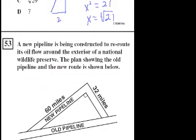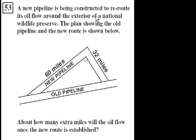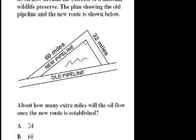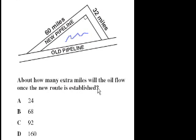Next question. A new pipeline is being constructed to reroute oil flow around the exterior of a National Wildlife Preserve. The plan showing the old pipeline and the new route is shown below. How many extra miles will the oil flow once the new route is established? So the new route is going to be 60 miles plus 32 miles. So the new route is 92 miles.